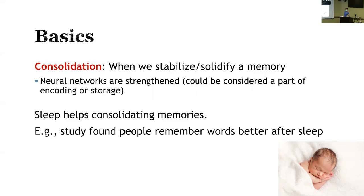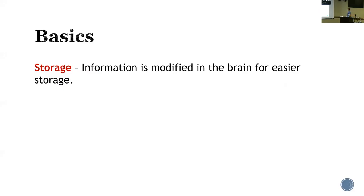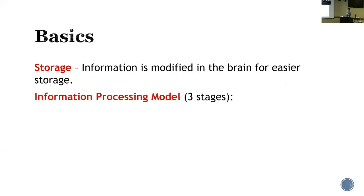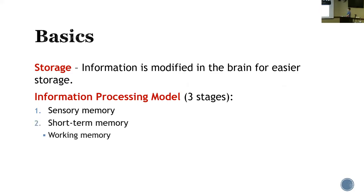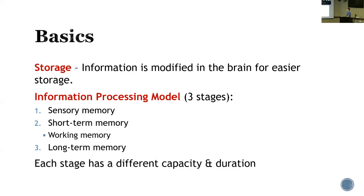Studies found that sleep helps consolidate memories. People remember words better after sleep. Next, we have storage — this is when information is modified in the brain for easier storage. We have the information processing model with three stages: sensory memory, short-term memory — which some psychologists also call working memory, though they overlap somewhat — and long-term memory. Each stage has a different capacity and duration.